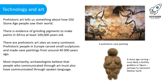Prehistoric art tells us something about how Old Stone Age people saw their world. There is evidence of grinding pigments to make paints in Africa at least 100,000 years old. There are prehistoric art sites on every continent. Prehistoric people in Europe carved small sculptures and made cave paintings from around 40,000 years ago. Archaeologists believe that people who communicated through art must also have communicated through spoken language. Here we can see an illustration of a prehistoric cave painting and a Stone Age carving, most likely a fertility goddess, perhaps representing Mother Earth.